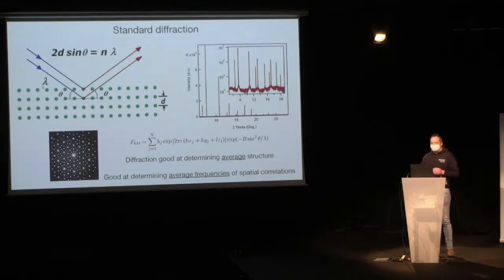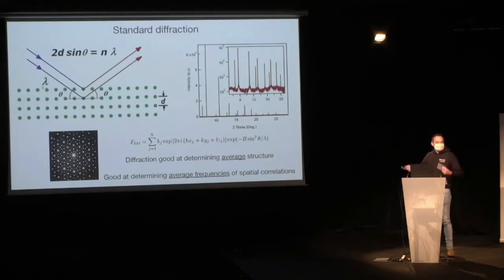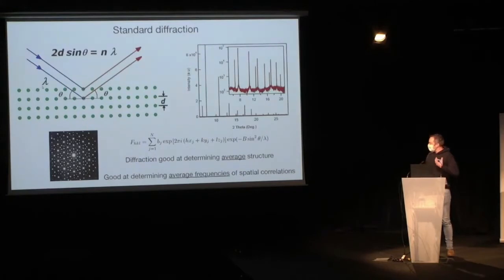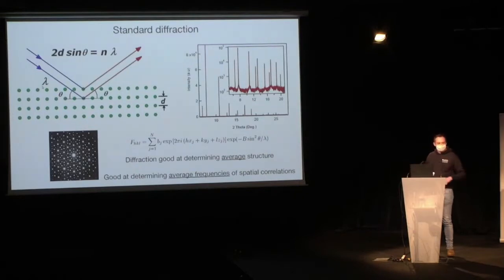For a nice crystalline material, we get very sharp peaks as a function of angle. Those are directly connected to the positions of atoms in a unit cell — the X, Y, Z coordinates — and we can very easily refine structures. This diffraction technique that everybody uses routinely is an excellent tool for looking at average structure; it's very good at determining the average frequencies of the spatial correlations in materials.